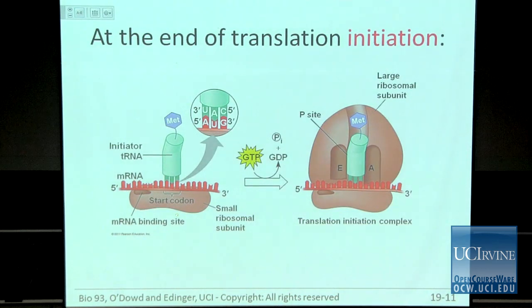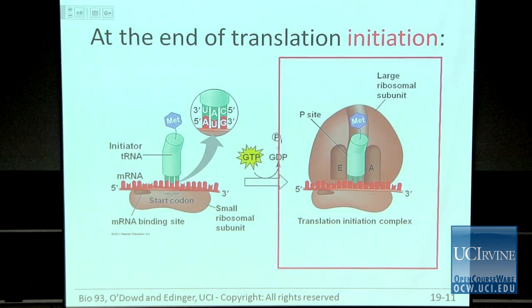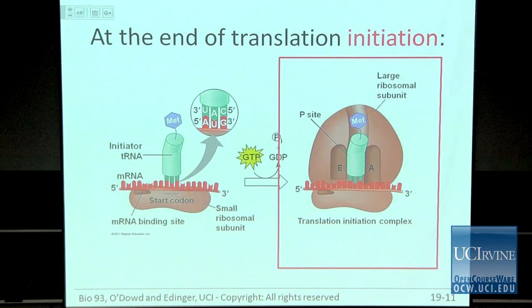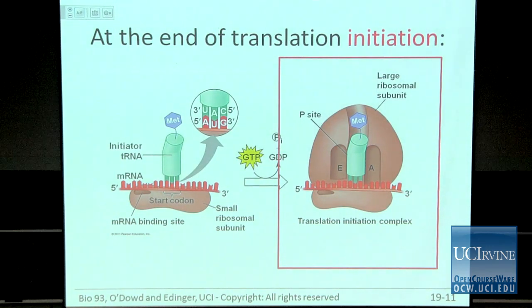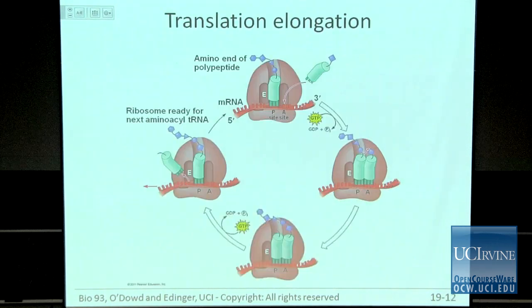After the small subunit is bound, you need the large subunit to associate with the mRNA, which costs a GTP. Once the large subunit associates with the small subunit on the initiator tRNA, you're done with the initiation phase. When initiation is complete, the methionine tRNA is in the P site. The ribosome has three sites: A, P, and E — acceptor, peptidyl, and exit. Now you're ready to elongate the polypeptide in cycles until you reach the stop codon.